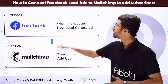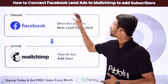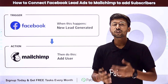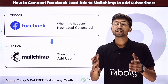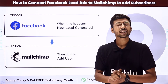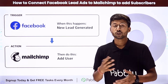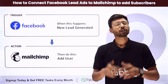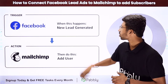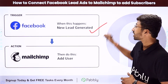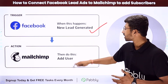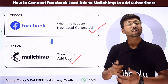In this video, we will learn how to connect Facebook Lead Ads to MailChimp to add subscribers. Suppose you are generating new leads from Facebook Lead Ads and you want to add those leads into MailChimp so that they can be part of your email marketing campaign. You can completely automate this process. The trigger will be new lead generation in Facebook Lead Ads, and the action will be addition of that user into MailChimp.